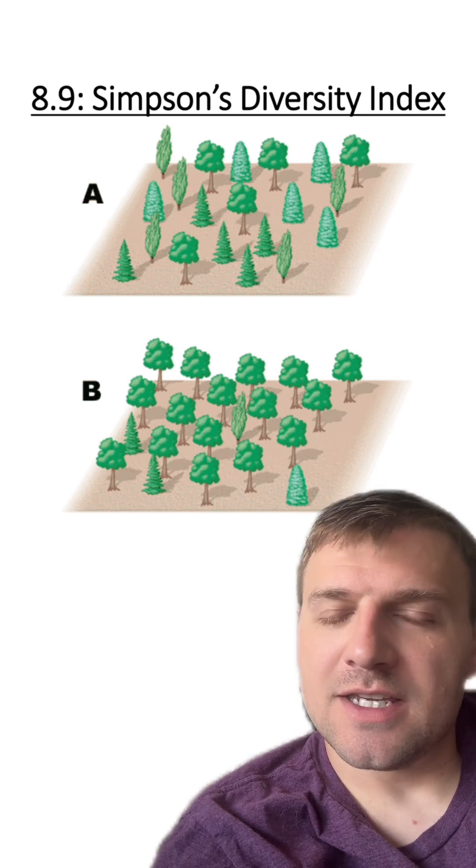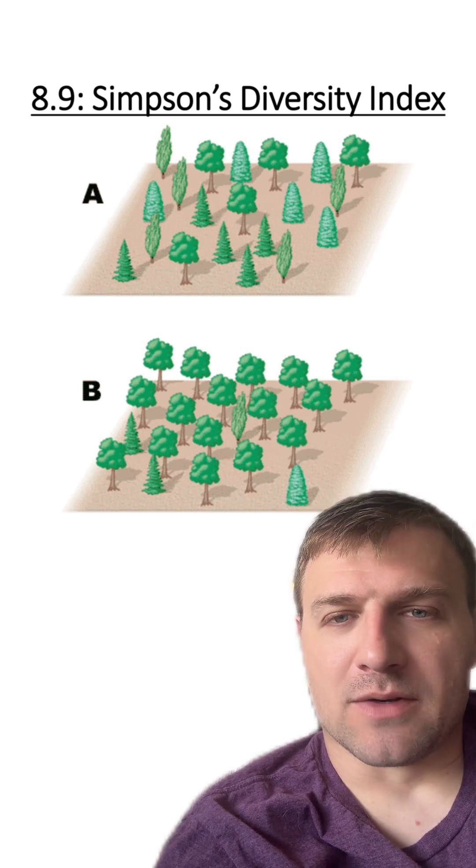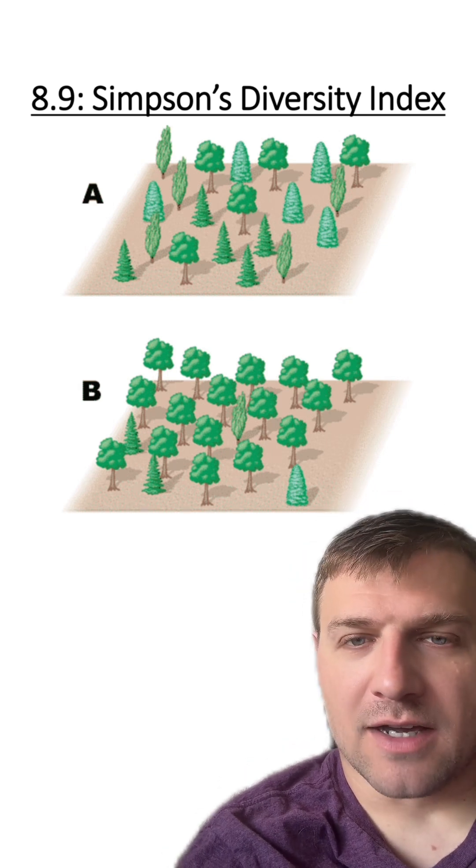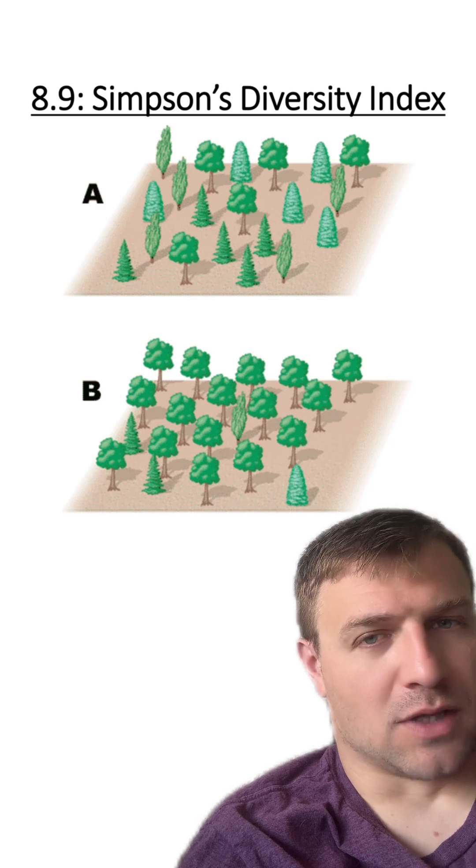If you look at the two ecosystems here, you can see ecosystem A is much more biodiverse than ecosystem B. This is because there are just more variety of trees in that ecosystem above compared with below.